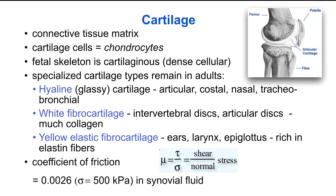The coefficient of friction, defined as the ratio of the shear stress to the normal stress at a lubricated surface, is very low in articular cartilage, especially in the presence of synovial fluid as the lubricating layer. Some measurements have it as low as 0.002 for modest loads such as 500 kilopascals.